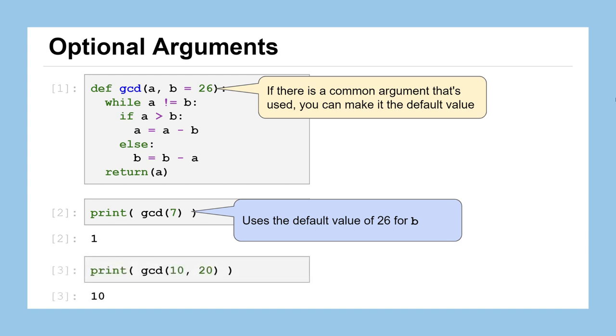You still retain the option of providing a value for the second parameter by just providing it in place of the same position that it would have gone normally. So this value of 20 will override the default argument of 26.